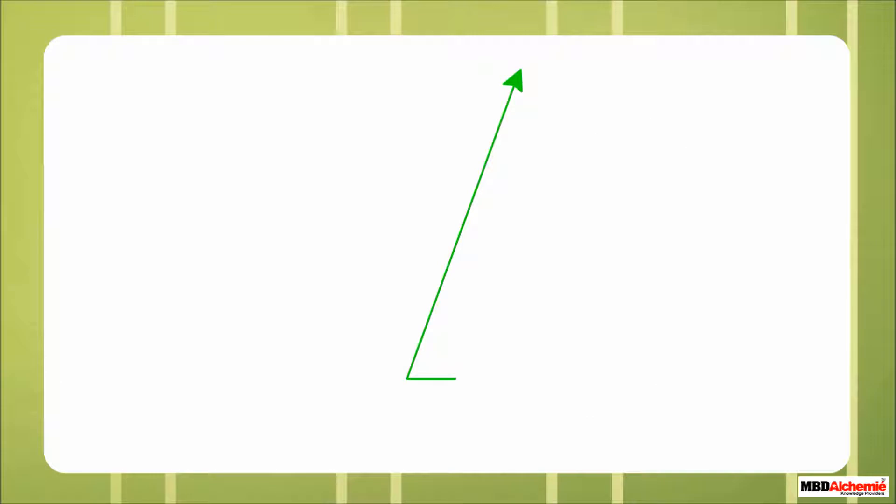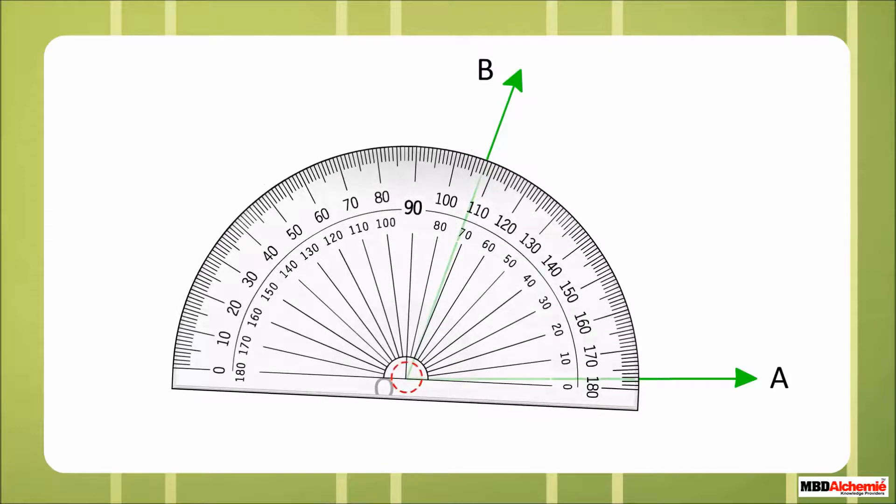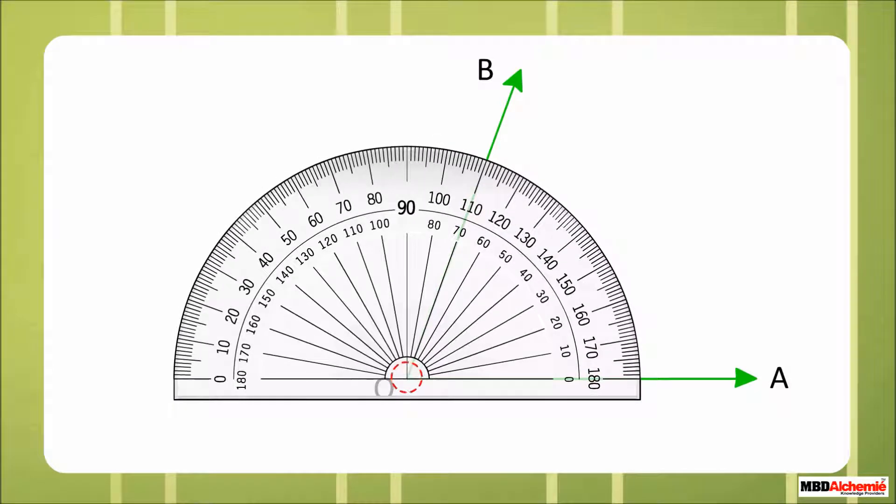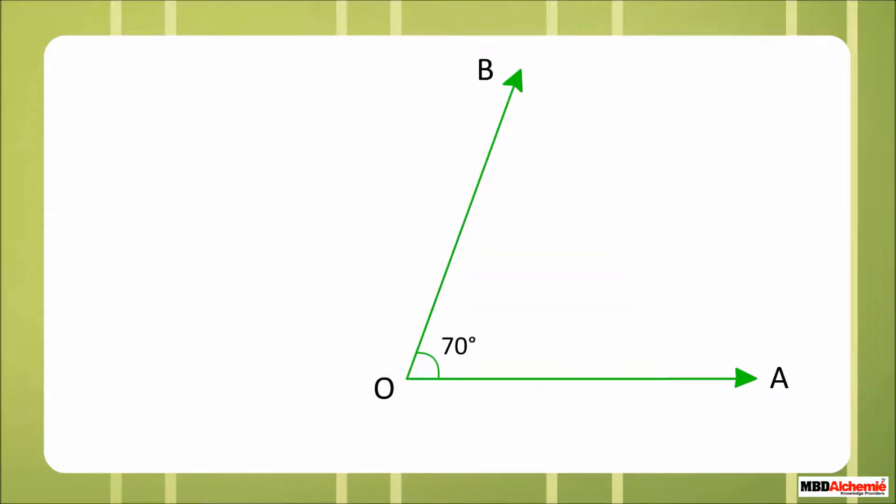Now let us measure an angle. Place the center of protractor on the vertex of the angle. Adjust the protractor such that the baseline falls along one arm of the angle. Read the mark on the protractor where the other arm crosses the scale on the protractor. Here, angle AOB is 70 degrees.